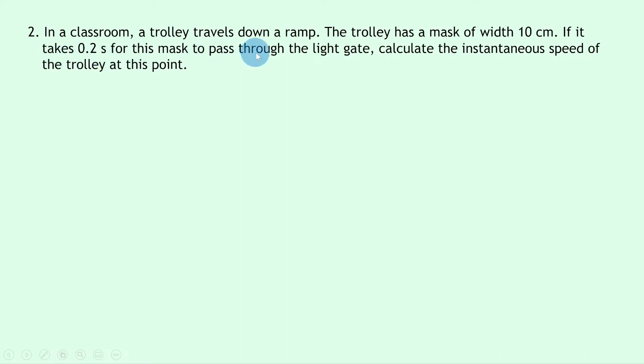Question 2 says in a classroom a trolley travels down a ramp. The trolley has a mask of width 10cm. If it takes 0.2 seconds for this mask to pass through the light gate, calculate the instantaneous speed of the trolley at this point. Well first of all we need to note that the distance here will be the width of the mask.